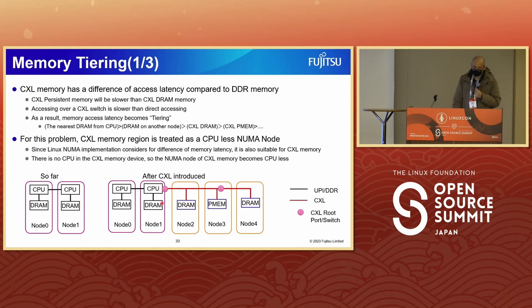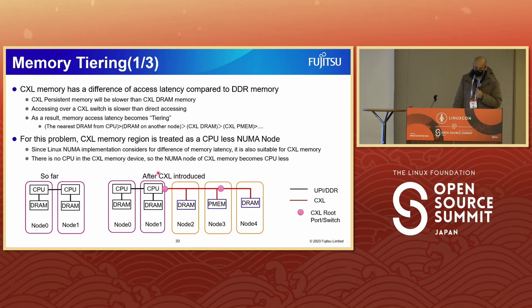The first topic is memory tiering. CXL memory has different access latency compared to DDR memory. CXL persistent memory is slower than CXL DRAM memory. Access over a CXL switch is slower than direct access. As a result, memory access latency becomes tiered: nearest DRAM from CPU, DRAM on another node, CXL DRAM and CXL PMem, and CXL DRAM over a CXL switch. To handle this, CXL memory regions are treated as CPU-less NUMA nodes. Since Linux's NUMA implementation considers differences in memory latency, it's also suitable for CXL memory. There are no CPUs in the CXL memory device, so the NUMA node of CXL memory becomes CPU-less.